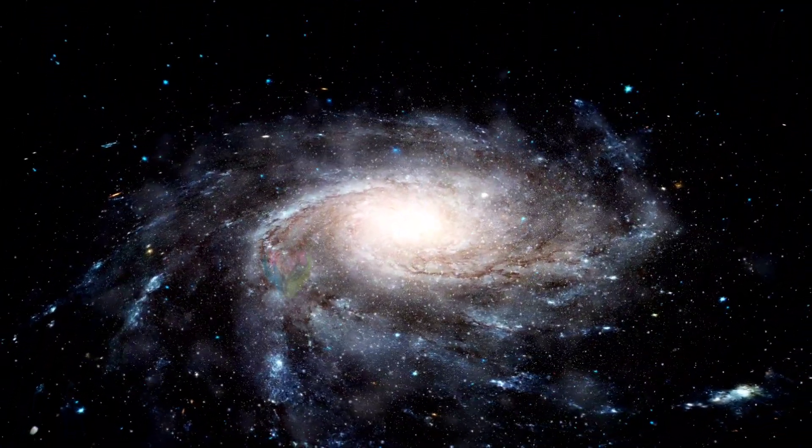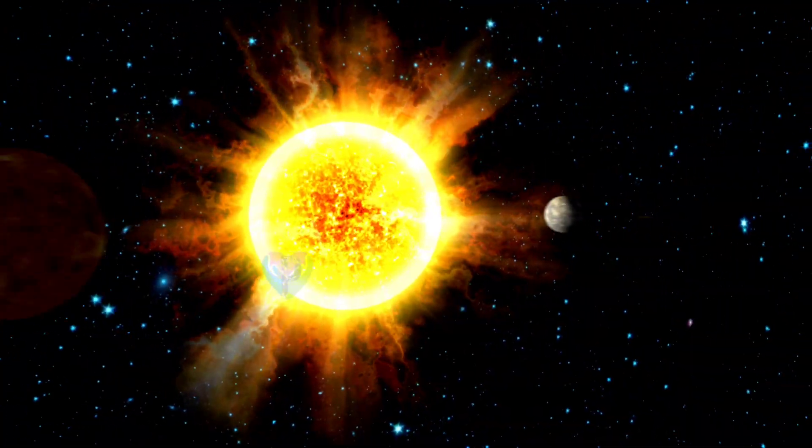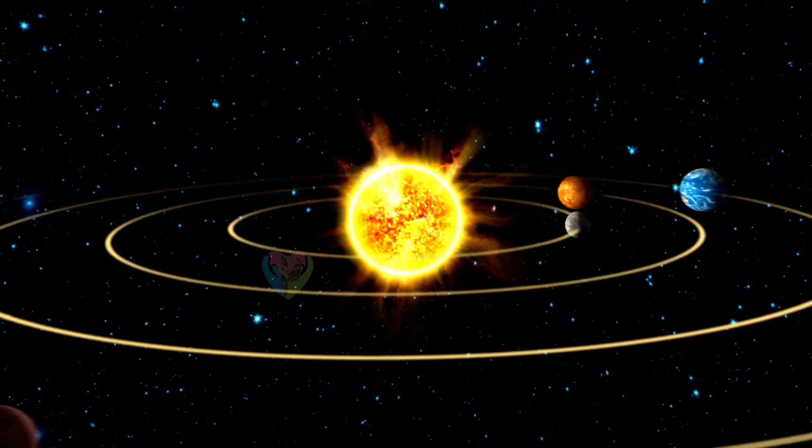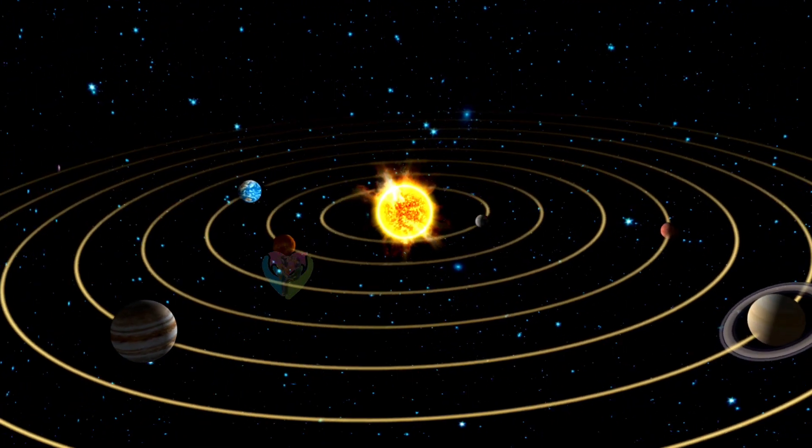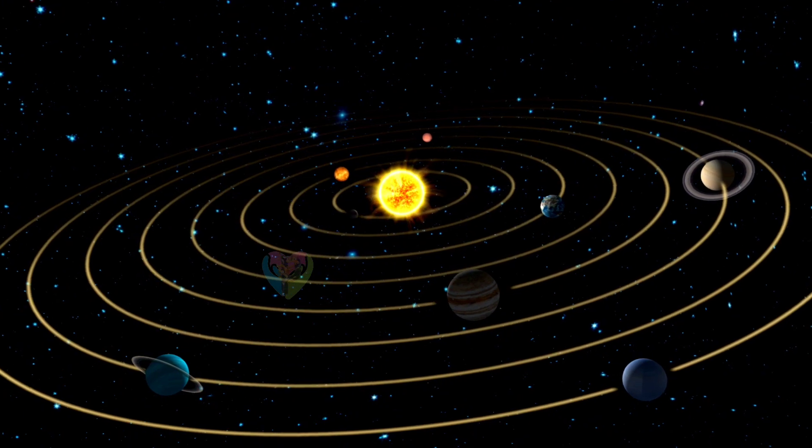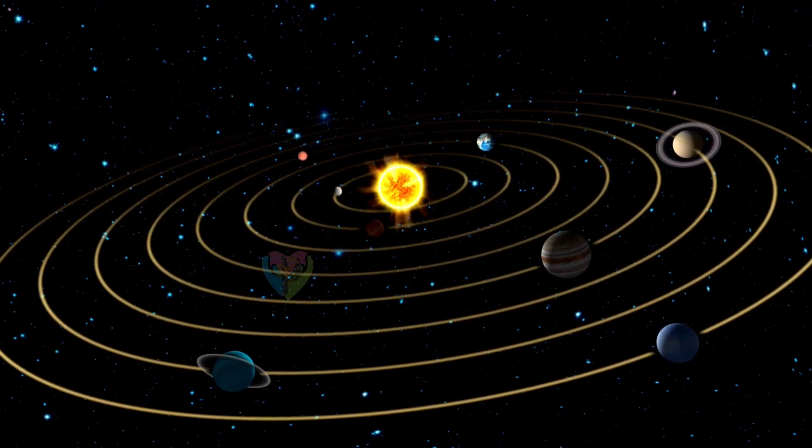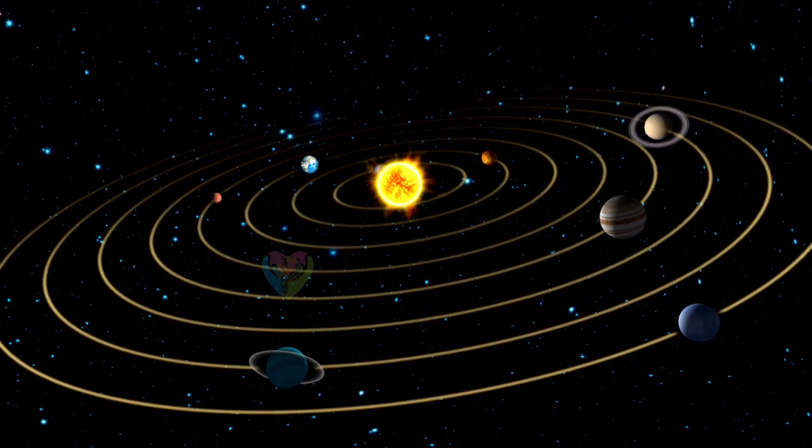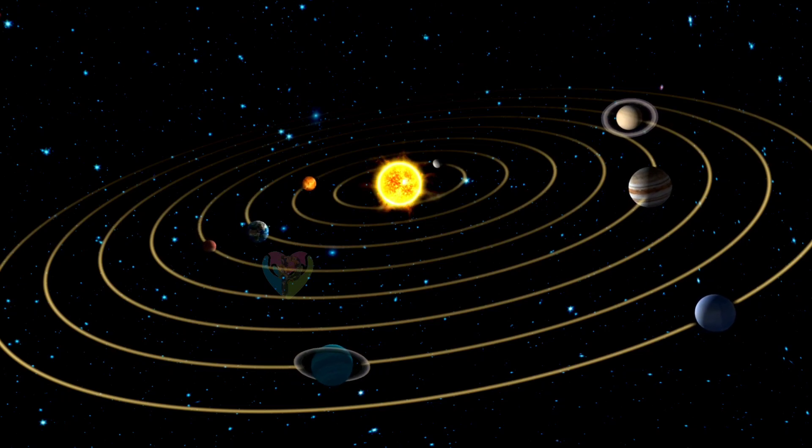There are an unknown number of smaller dwarf planets and innumerable small solar system bodies orbiting the Sun. Six of the major planets, the six largest possible dwarf planets, and many of the smaller bodies are orbited by natural satellites, commonly called moons, after Earth's moon.